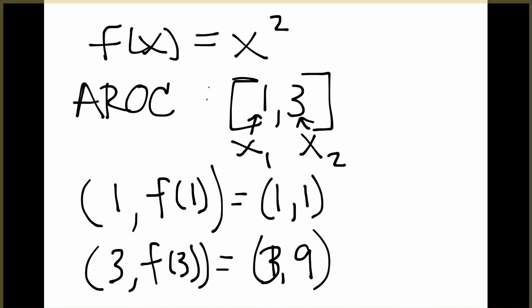And once we have two points to find the average rate of change, we simply use our average rate of change formula, also known as our slope formula, and we find the change in y over the change in x's. 9 minus 1 is 8, 3 minus 1 is 2, 8 over 2 is 4. So the average rate of change on that interval would simply be 4.